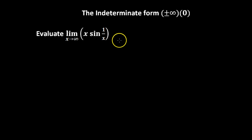In this video, we'll walk through an example of the indeterminate form infinity times 0. If we have to evaluate the limit of x times sine of 1 over x as x approaches infinity.